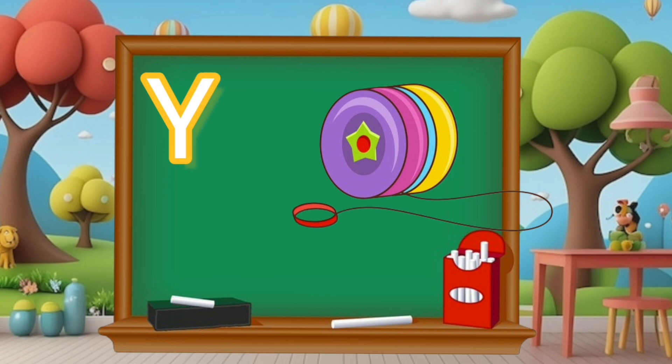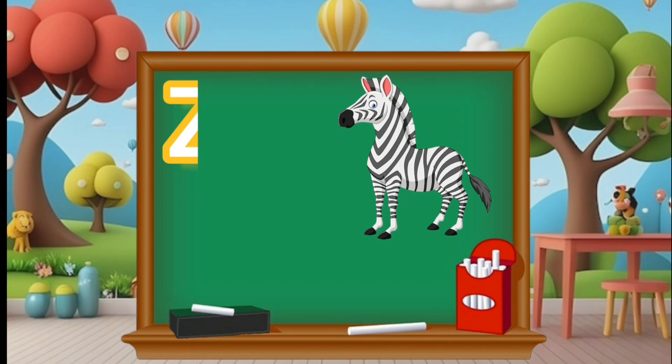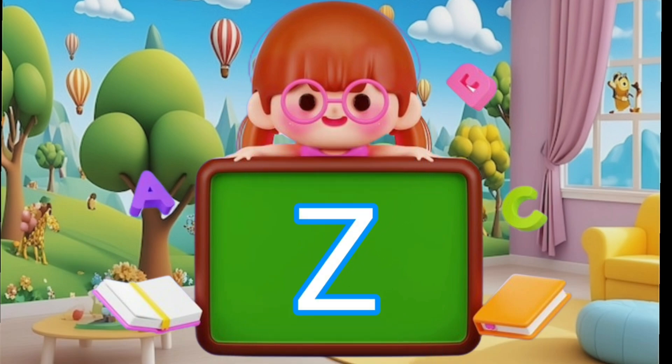Y is for yo-yo. Now say Y. Y. Z is for zebra. And let's say Z. Z.